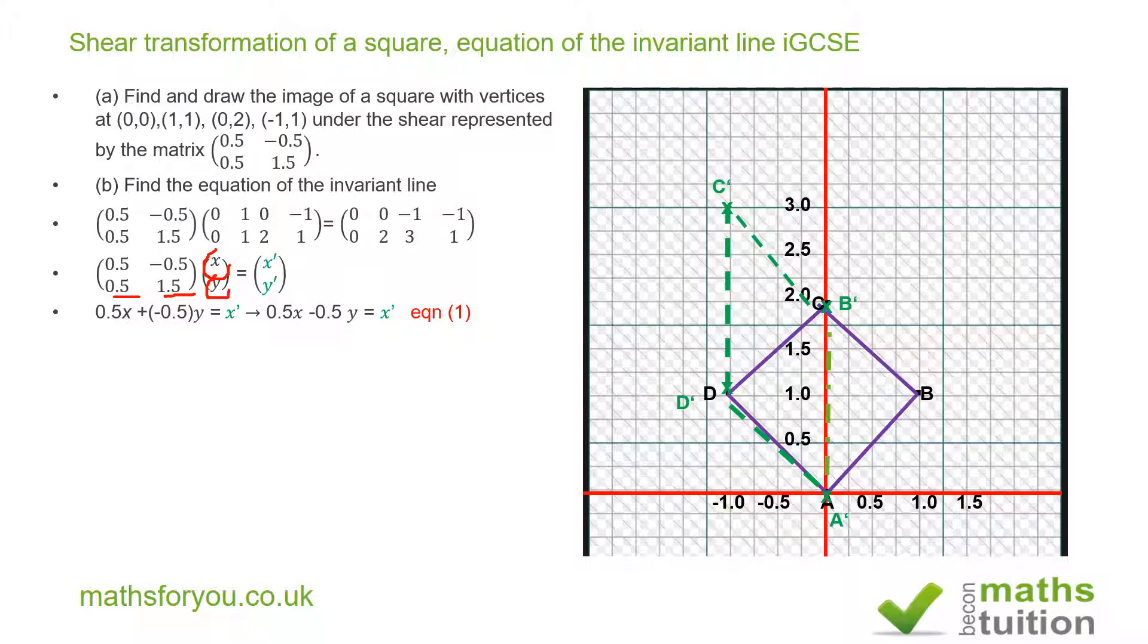So I've got that. If I add equation 1 to equation 2, I get that. Don't forget that if x',y' and x,y are on the invariant line, then x will be the same as x' and y will be the same as y'.